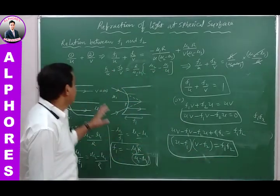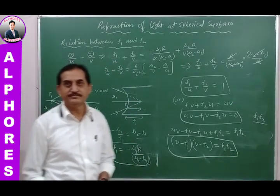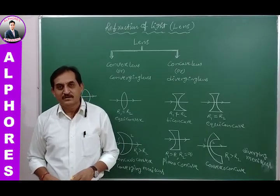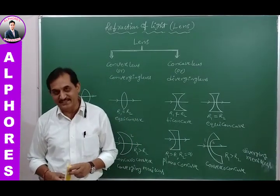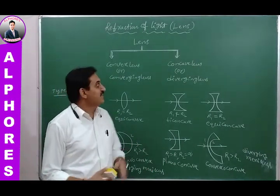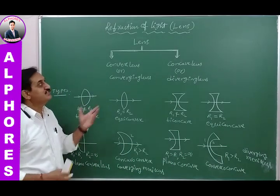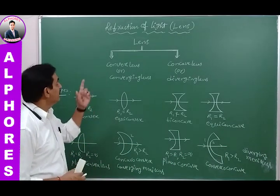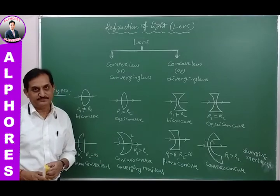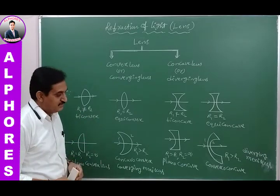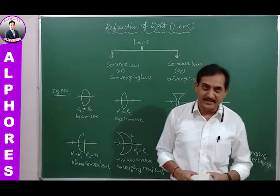So these are the relations between F₁ and F₂ for a spherical refracting surface. Now let us move on to another concept — the lens — related to refraction of light, which is also one of the important parts in the study of refraction.